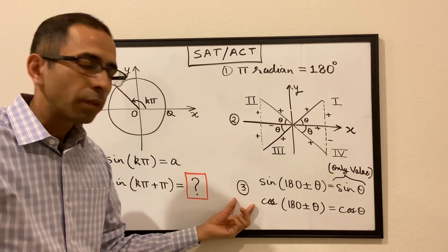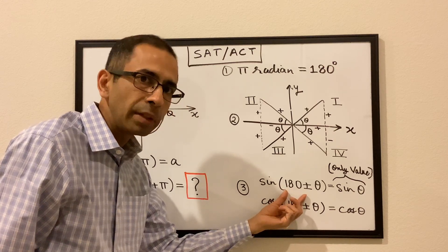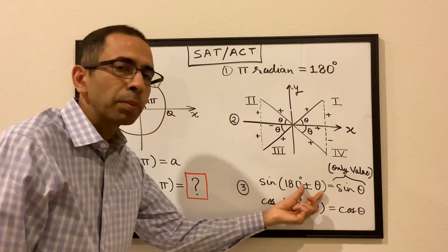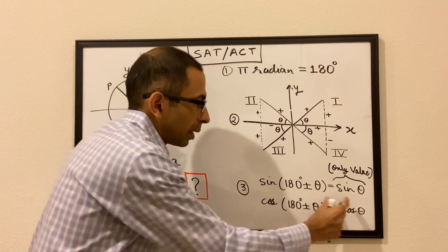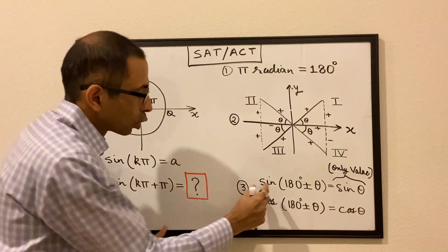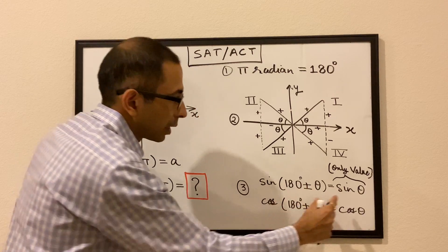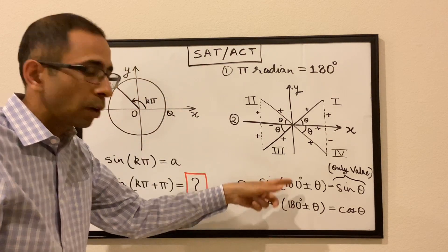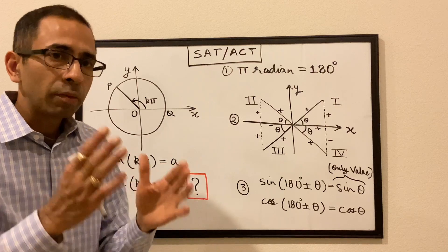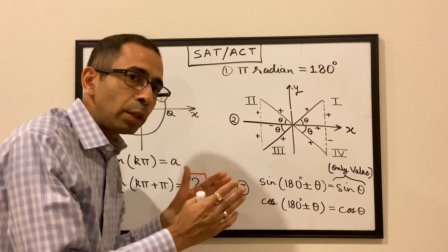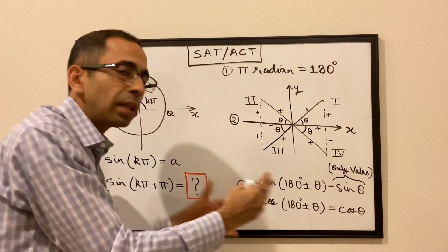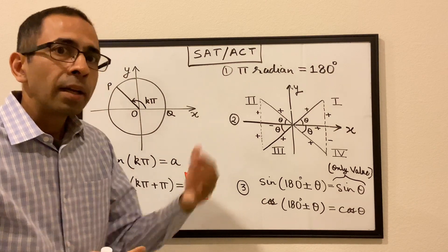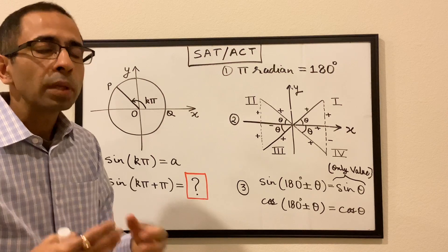The third concept: whenever we are dealing with 180 degrees, sine of 180 degrees plus or minus θ will remain sine. So sine of 180° ± θ equals sine θ. Similarly, cosine of 180° ± θ equals cosine θ. The same does not happen when dealing with 90 degrees — it will flip. But as long as we are dealing with 180 degrees, the value remains the same — sine stays sine, cosine stays cosine. All we need to do is determine which quadrant the angle lies in and put a positive or negative sign accordingly.